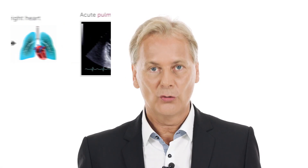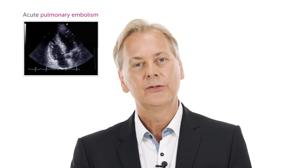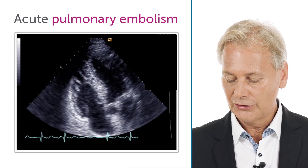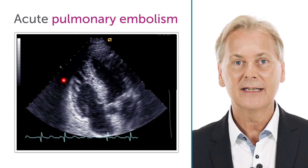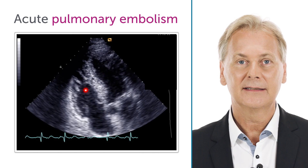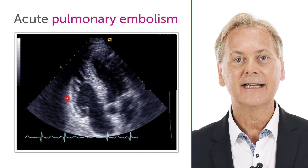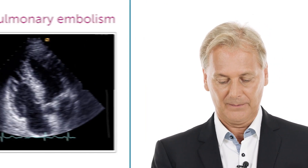When you look at a patient who has pulmonary embolism, you have to focus firstly on the right ventricle. What you would usually see primarily is a dilatation of the right ventricle and a decrease in right ventricle function.